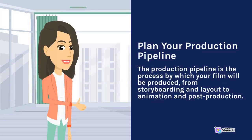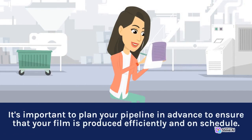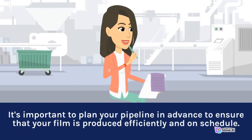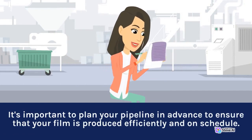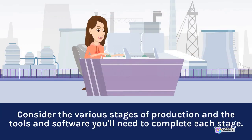Plan your production pipeline. The production pipeline is the process by which your film will be produced, from storyboarding and layout to animation and post-production. It's important to plan your pipeline in advance to ensure that your film is produced efficiently and on schedule. Consider the various stages of production and the tools and software you'll need to complete each stage.